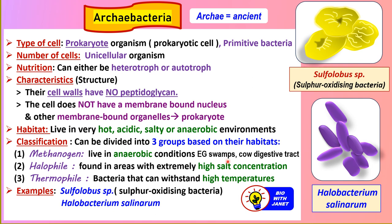Archaebacteria can be divided into three groups based on habitat. Methanogens are methane producers — they produce methane from their metabolic processes and live in anaerobic conditions such as in swamps, cow's digestive tract, and human digestive tract. Halophiles — 'halo' means salt, 'phile' means loving — are salt lovers found in areas with extremely high salt concentration like the Dead Sea. Thermophiles — 'thermo' means heat — are heat lovers that can withstand high temperatures, such as in hot springs.